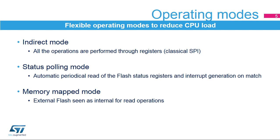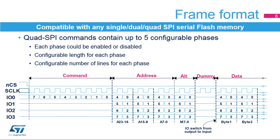The Quad SPI Memory Interface operates in three different modes. Indirect Mode, where it behaves as a classical SPI interface and all operations are performed through registers. Status Polling Mode, where the flash status registers are read periodically with interrupt generation. And Memory Mapped Mode, where the external memory is seen as an internal memory for read operations.